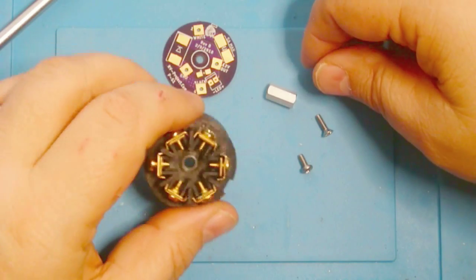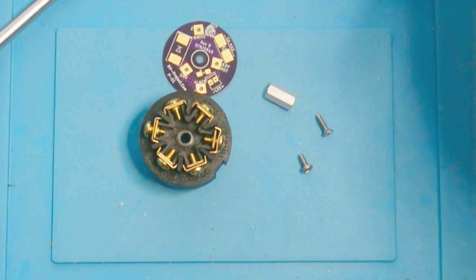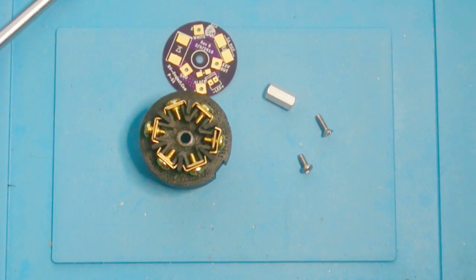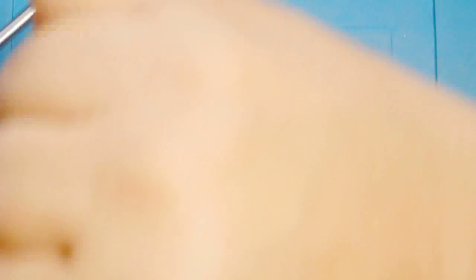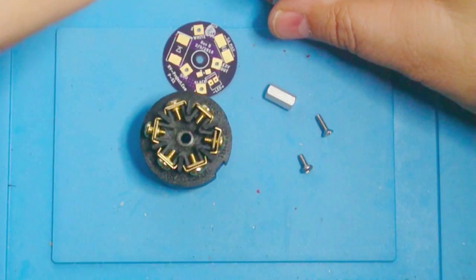One of the things I want to do is I want to goop this a little bit so that it kind of stays on. You can use thread locker or whatever your favorite goop is, but I like using gliptol.